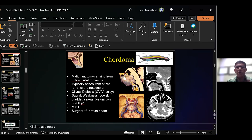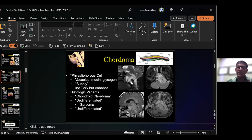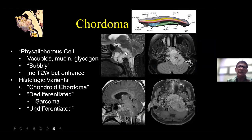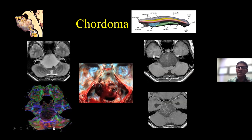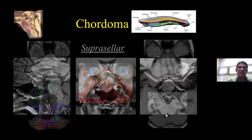Chordomas tend to be midline lesions because they arise from the spinal cord, and they also tend to have a pseudo-cystic appearance. That's because they tend to be cystic on T2 — which they're really not, because they contain a lot of mucin — and they also enhance with contrast. So they are solid, but they tend to be midline. When you give T1-weighted images with contrast, you can see that it's enhancing.